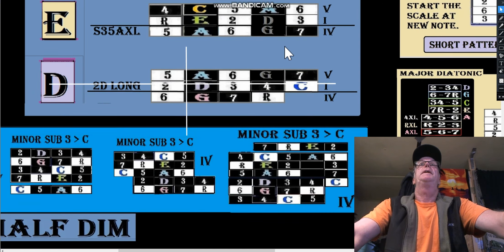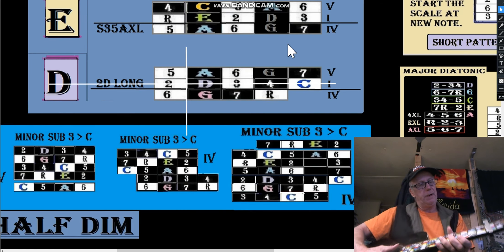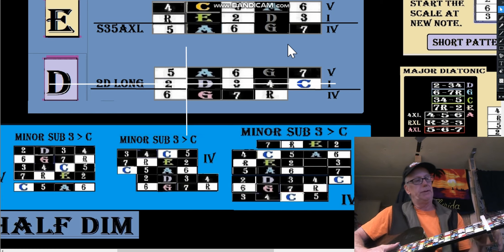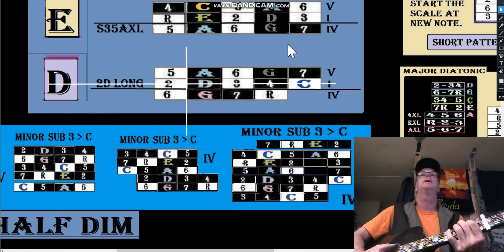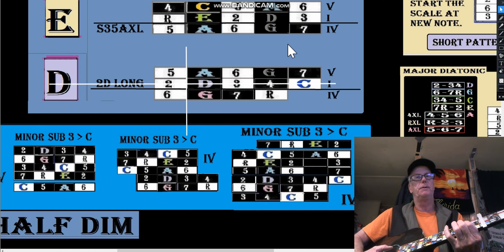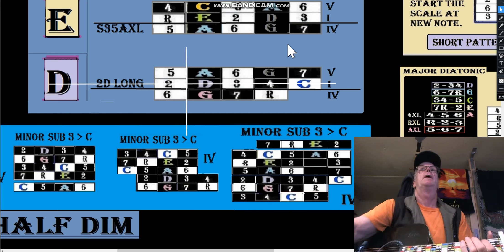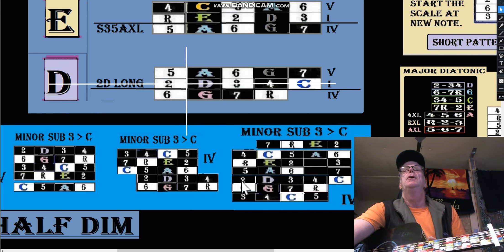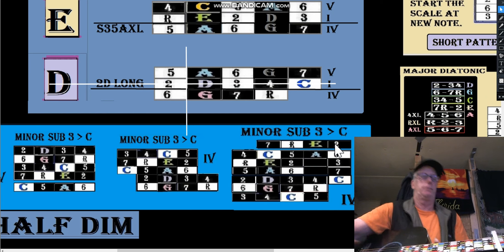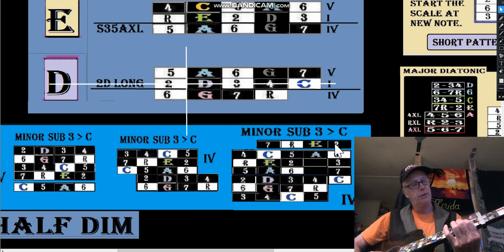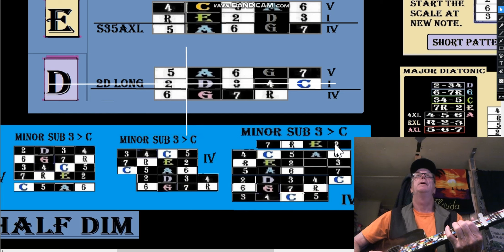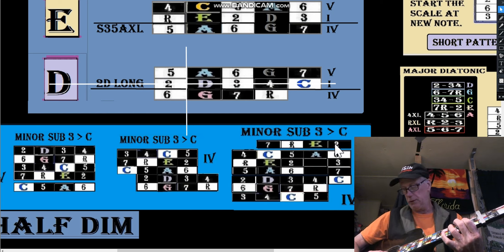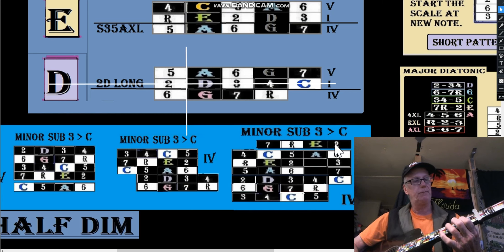Starting right here, we know here's our fret nut. If we have the capo here and we want to look at the E, it'd be two, three, two, three, four, and then five, six to the B. The diatonic we'd play at that point would be a pretty long pattern - down here two, three, four, five, six, and we'd go root, two, three, four, five, six, seven, root, two. So we'd start here: two, three, four, five, six.